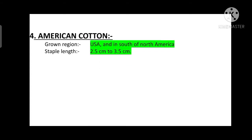The fourth one is American cotton. It is grown in USA and in the South of North America, and its staple length is 2.5 cm to 3.5 cm.